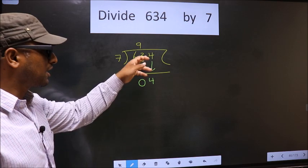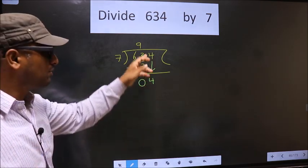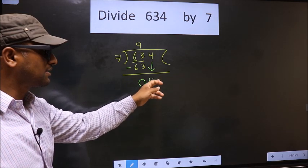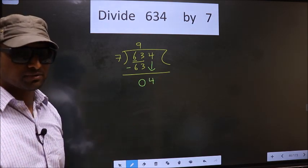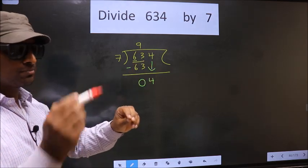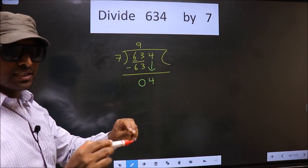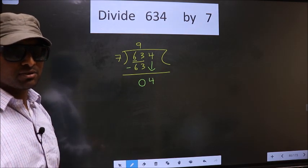You just now brought a number down, and in the same step, you want to put a dot and take 0, which is wrong. I repeat. Bringing the number down and putting a dot and taking 0, both at the same step, you are not supposed to do.